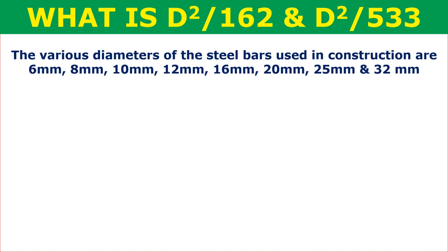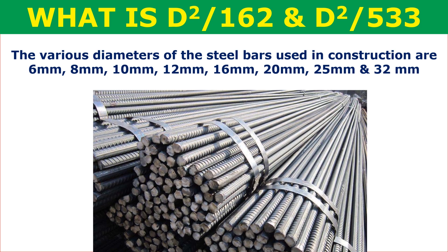d² by 162 and d² by 533 are the formulas for calculating the unit weight of steel for a given length of bar in meters and feet respectively. The various diameters for the steel bar used in construction are 6 mm, 8 mm, 10 mm, 12 mm, 16 mm, 20 mm, 25 mm and 32 mm.